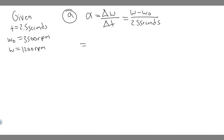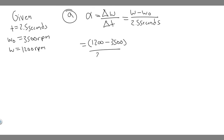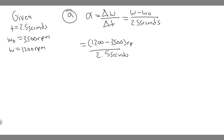So it's going to be equal to the final value, 1200, minus 3500, all over 2.5. But keep in mind when we solve this, we want it to be in radians per second — and this is currently in revolutions per minute. So we have to manipulate this a bit, because we need the top to be radians per second, not RPM.